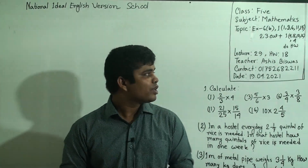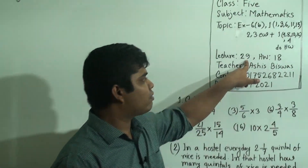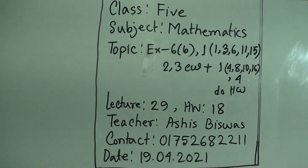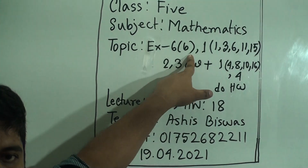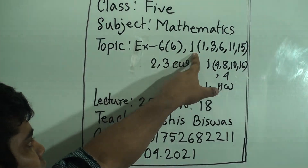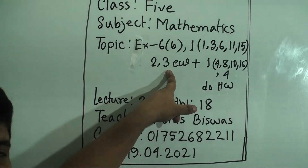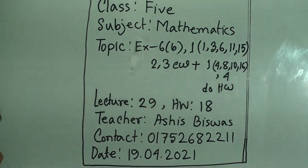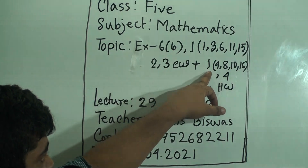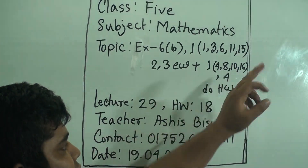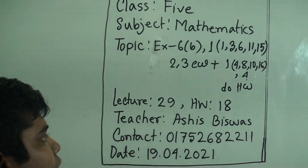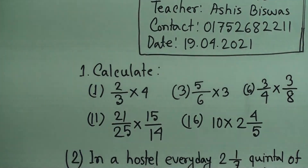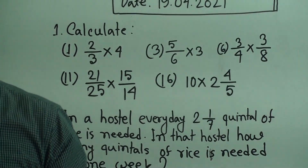My dear students, let us start our class. Today is our lecture number 21 of half yearly, and today's homework number will be 18. Our today's topic is Exercise 6B. From that chapter we shall solve question numbers 1, 2, and 3 for CW. From question 1 we shall solve numbers 1, 3, 6, 11, and 15, and from question 1 numbers 4, 8, 10, and 16. Question number 4 will be your homework from the same chapter.